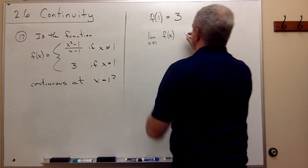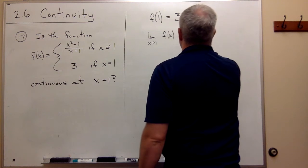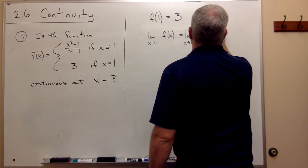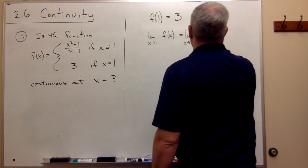So, instead of writing this, I could write the limit as x goes to 1 of x squared minus 1 divided by x minus 1.